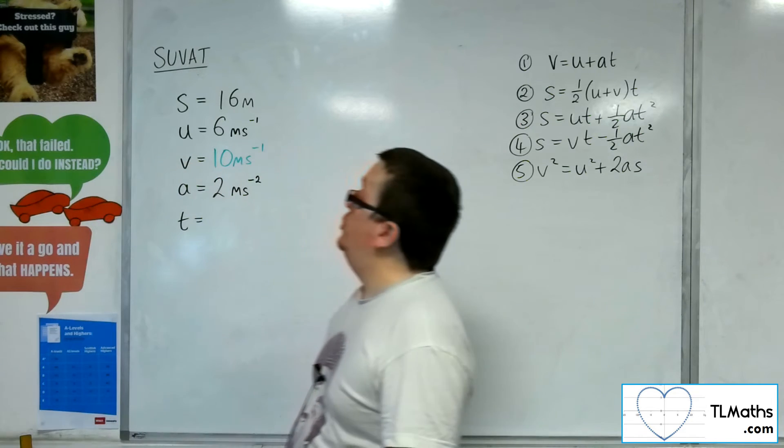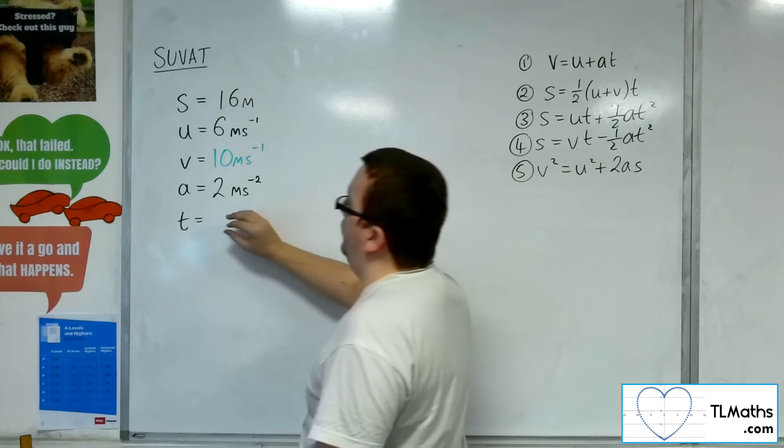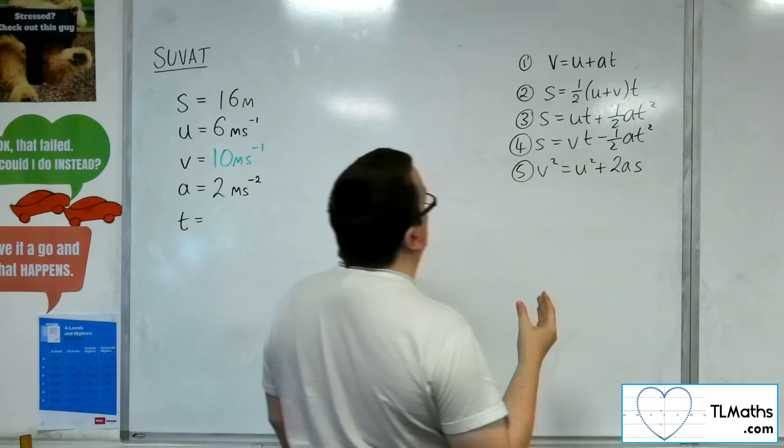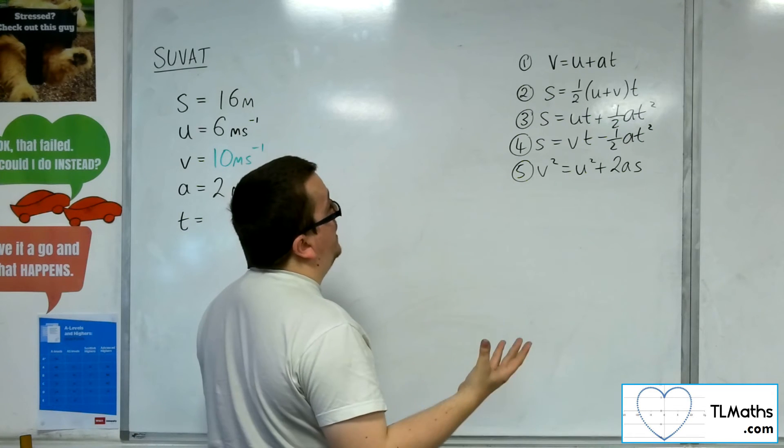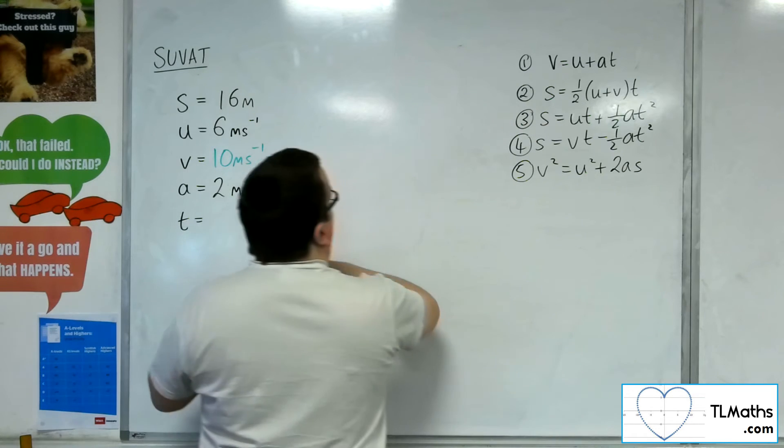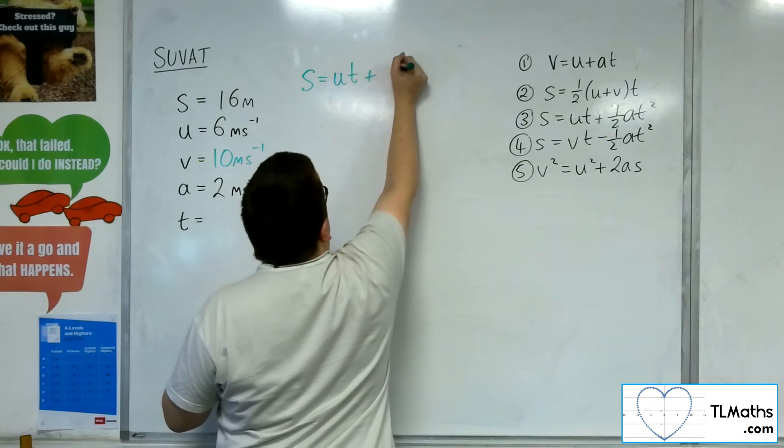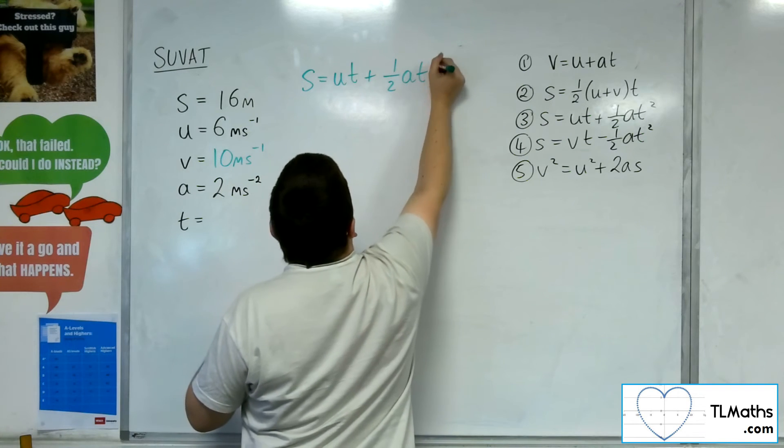So going back to the original information that we've got the s, the u, the a, and I want t, I'm now looking for the equation that doesn't have v. So that would be the third one. So the third one says s equals ut plus 1 half at squared.